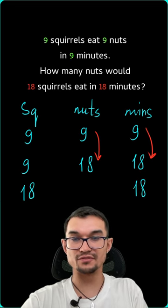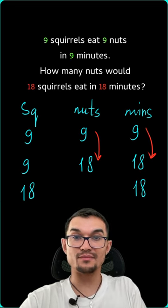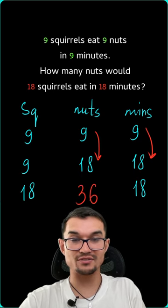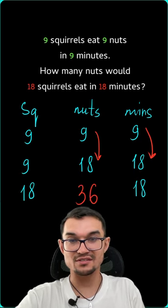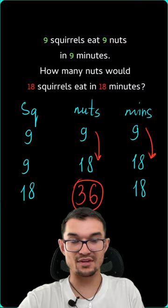And now, if we double the amount of squirrels, then the amount of nuts would also double because they just eat 2 times more nuts. So, 36 is the right answer.